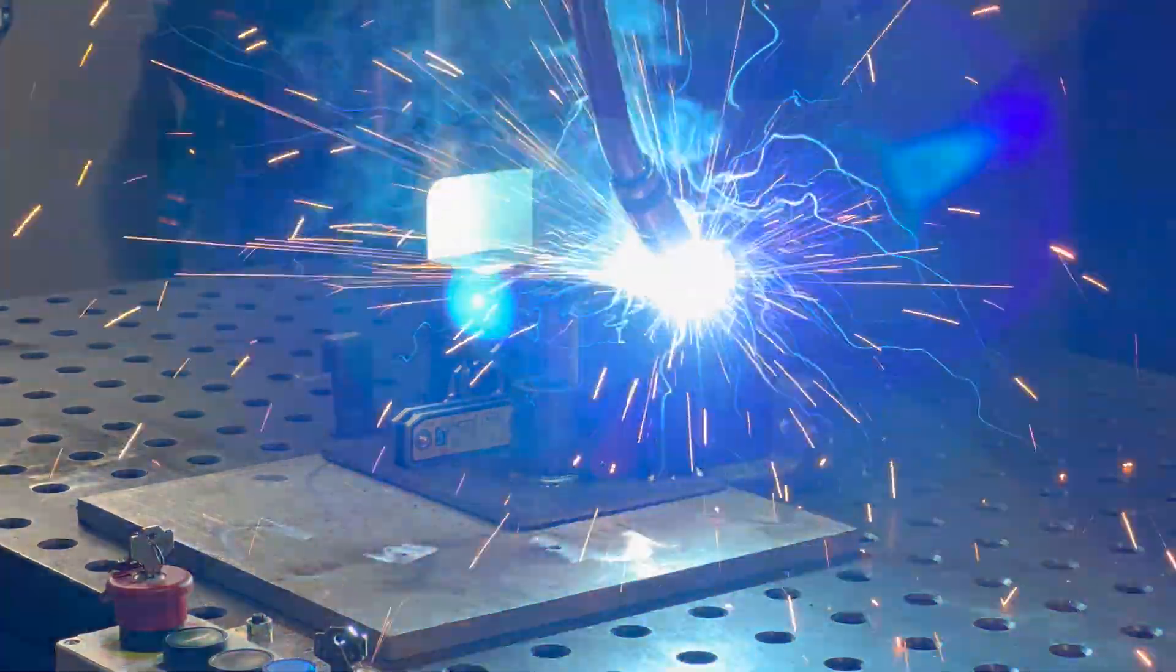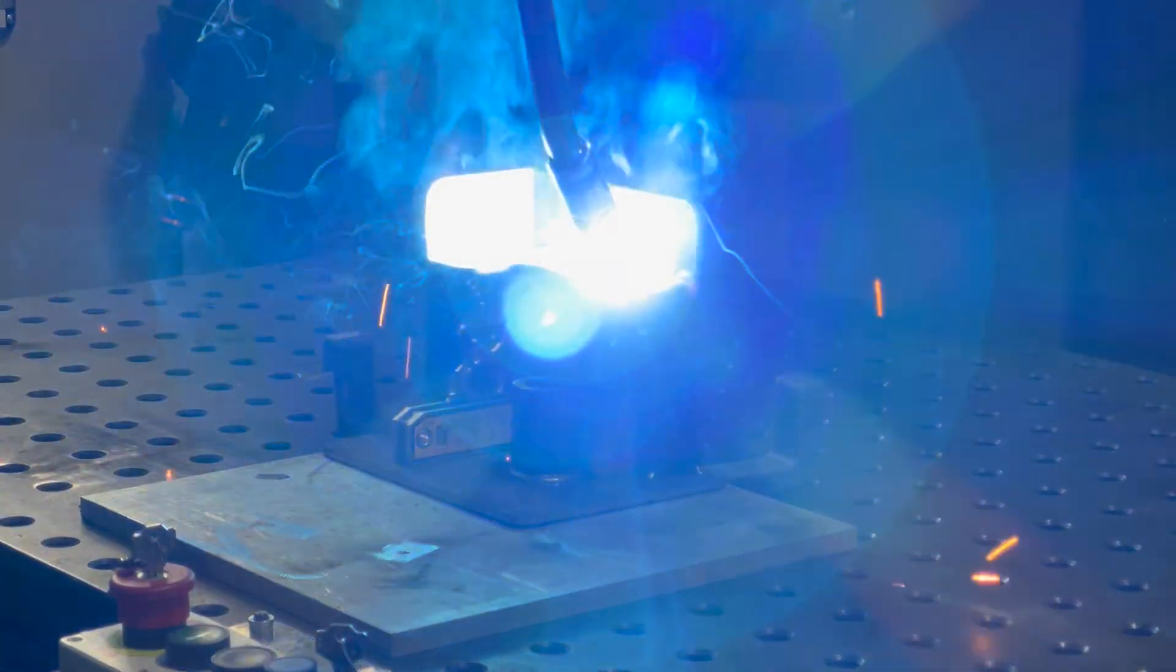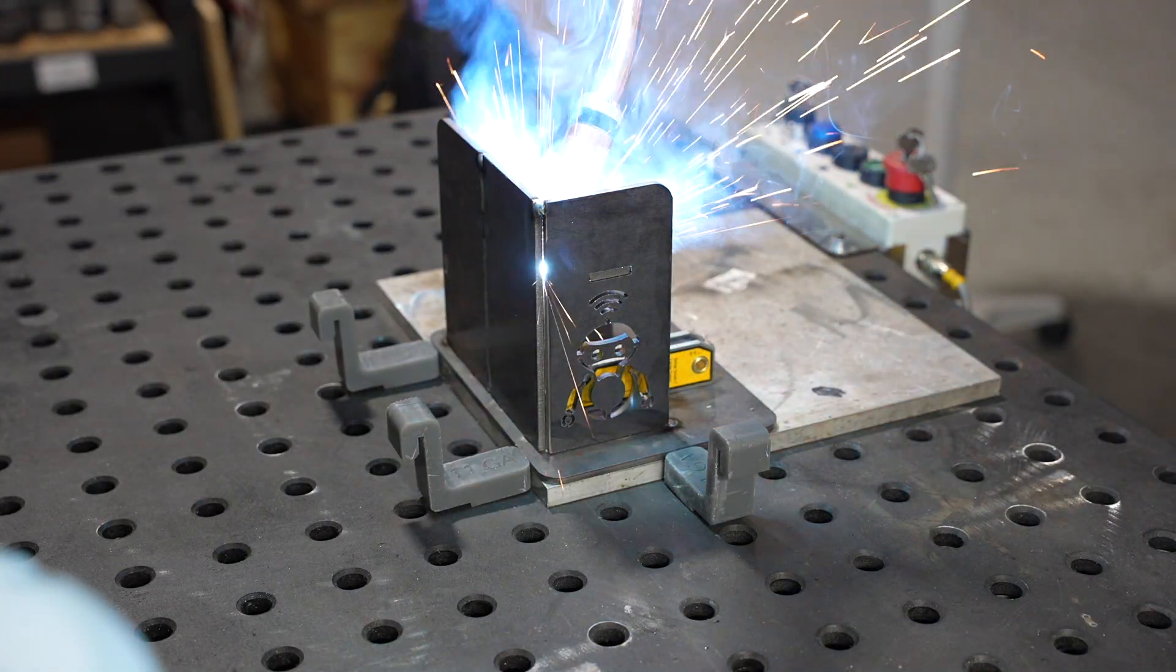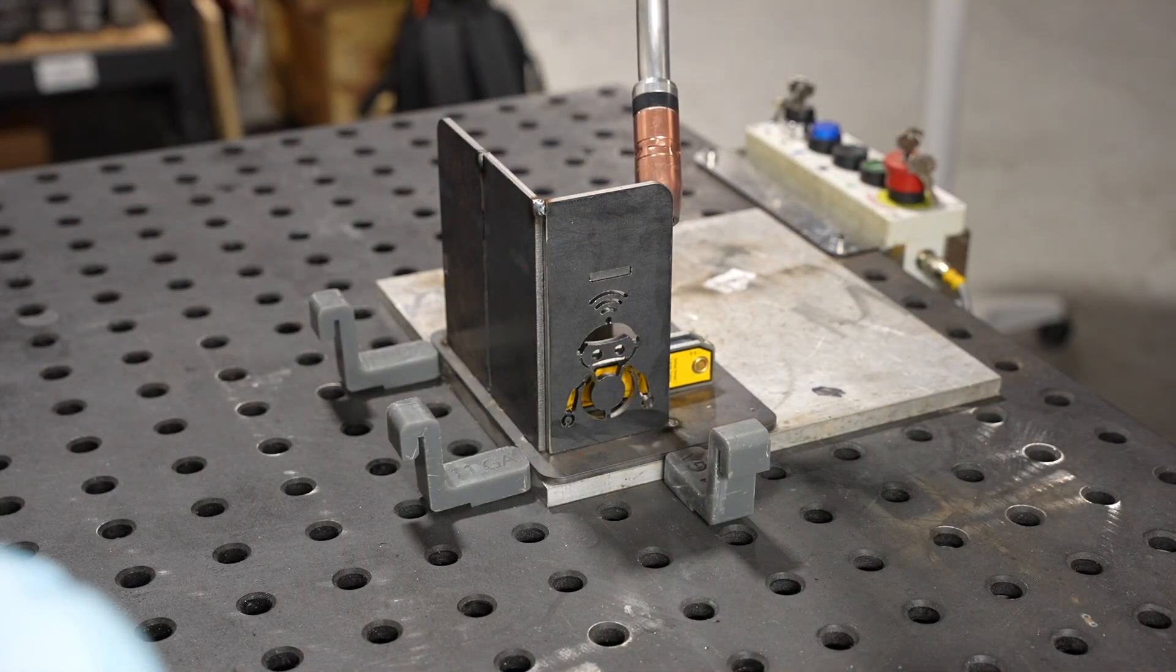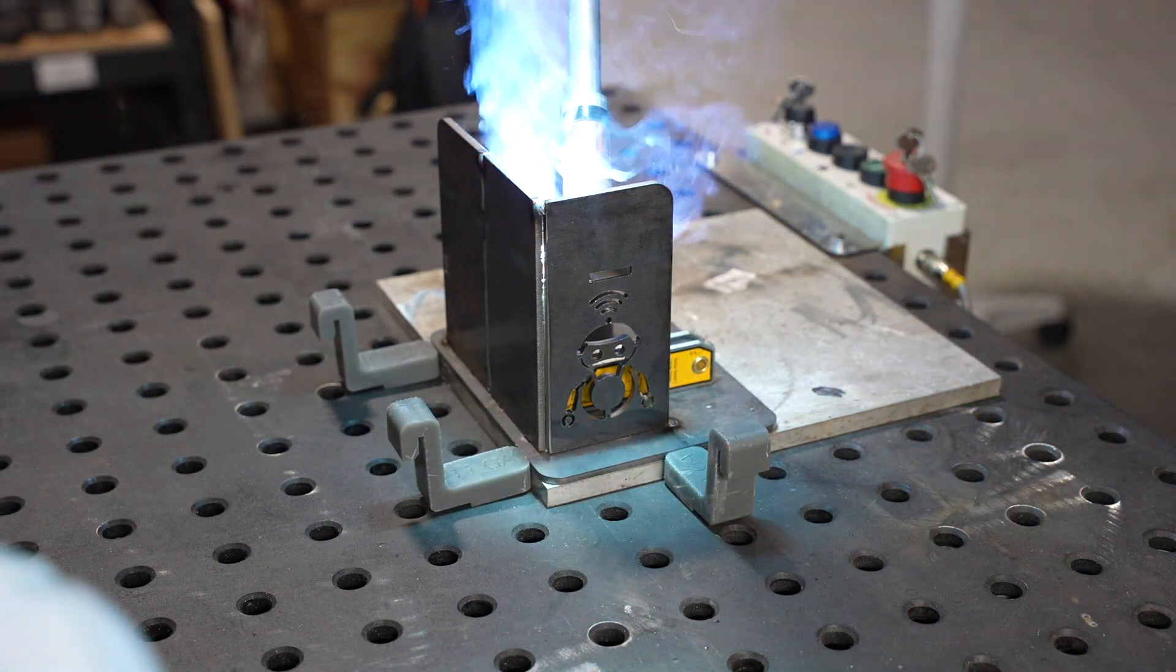One segment had an intermittent weld. When I did it manually it took time to measure and mark out - you could use a template in production. But to program it, it was still just two points, you put in the parameters for the skip weld, and it's ready to go.